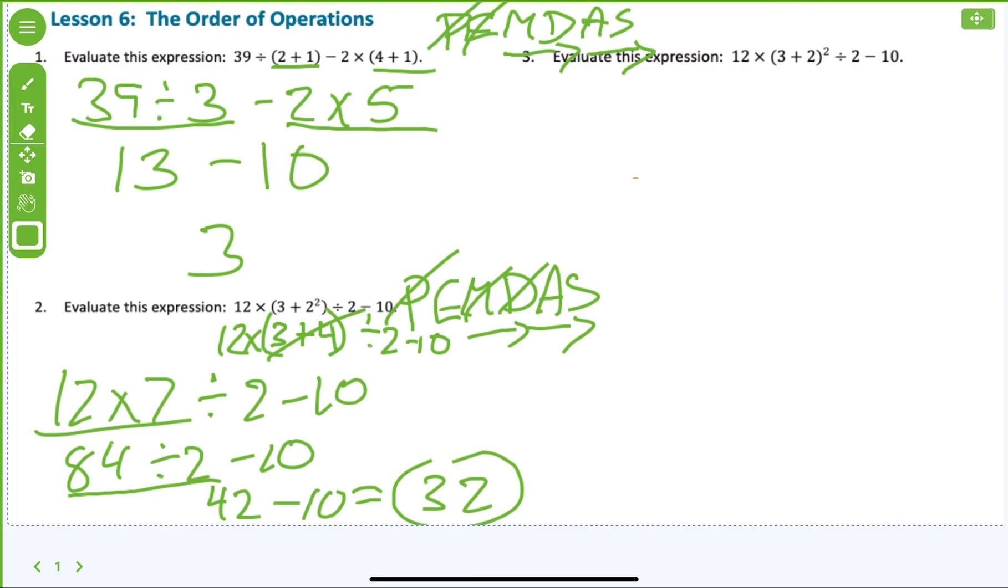Does everybody know how to do PEMDAS? Please excuse my dear Aunt Sally. That's how you remember what order. Please excuse my dear Aunt Sally. P, please. E, excuse. M, my. D, dear. A, Aunt. S, Sally. Dear is like an affectionate title. Oh, dear Simon. My dear. That type of stuff.